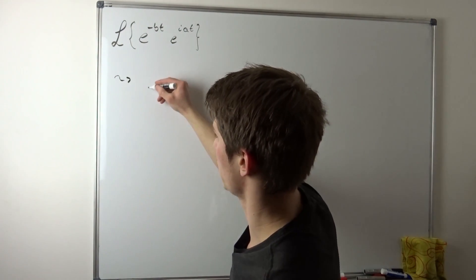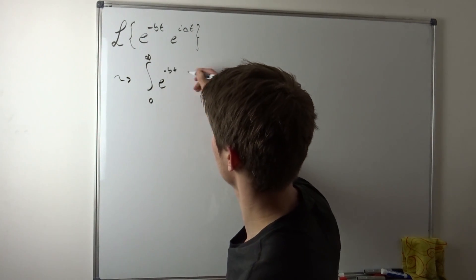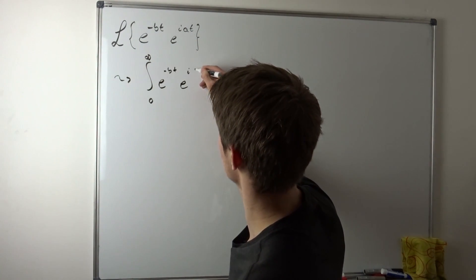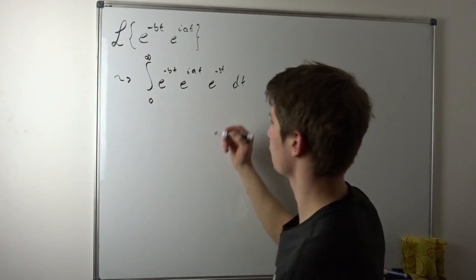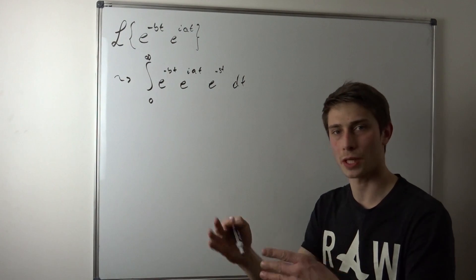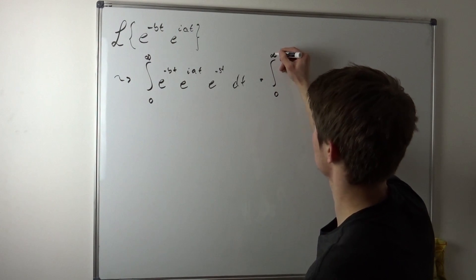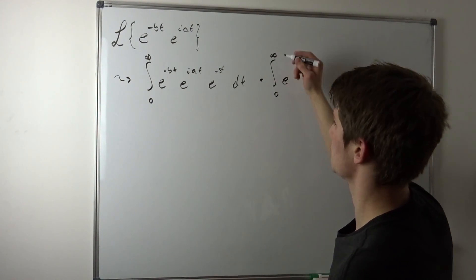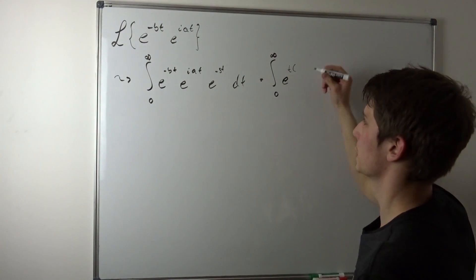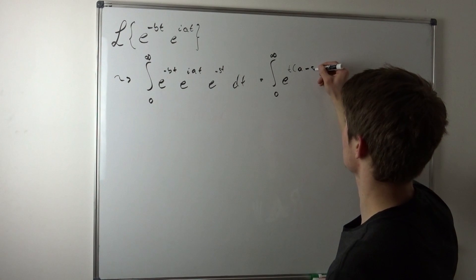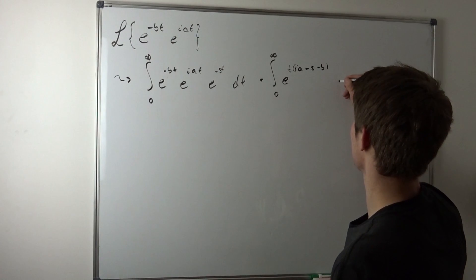So what do we end up with? That's the improper integral from zero to infinity of e to the minus bt, times e to the iat, times e to the minus st, dt. They have the same base so we can bring them together and add the exponents. So that's the improper integral from zero to infinity of e to the t times (ia minus s minus b), dt.